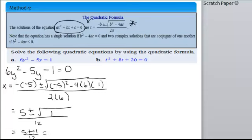So, we're going to have 5 plus or minus 1 over 12. This is equal to, well, 5 plus 1 is 6, 5 minus 1 is 4. So, that's equal to either 1 half or 1 third. Those are your two solutions to this quadratic equation.